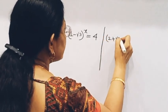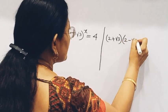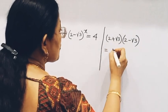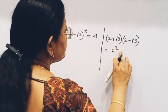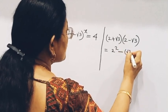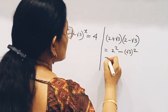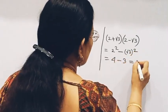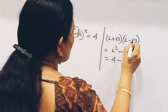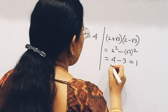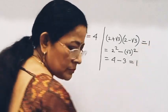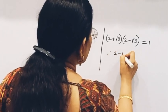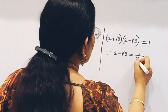Note that (2 + √3)(2 - √3) is equal to 1. Therefore, 2 - √3 is equal to 1 divided by (2 + √3).